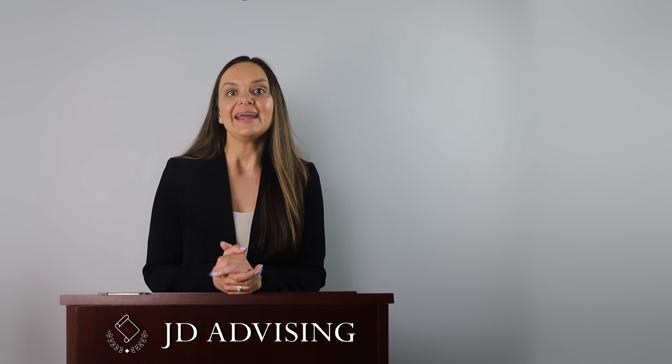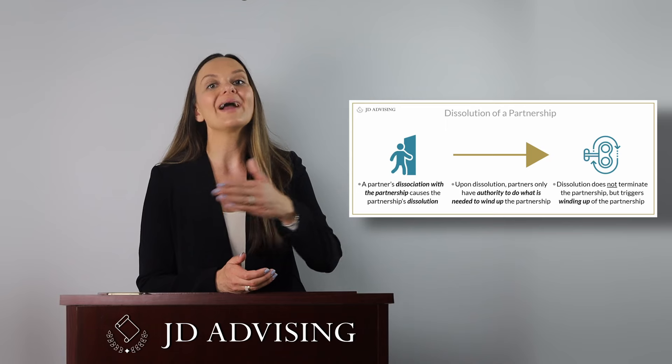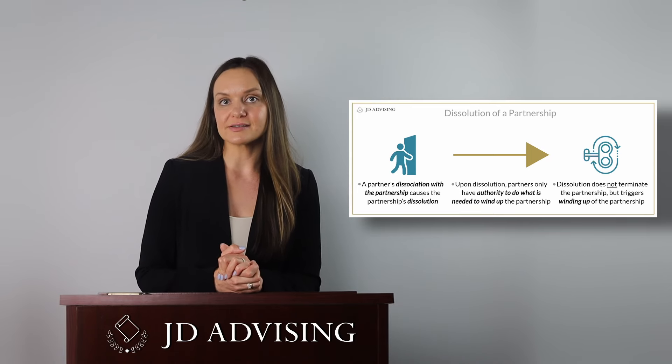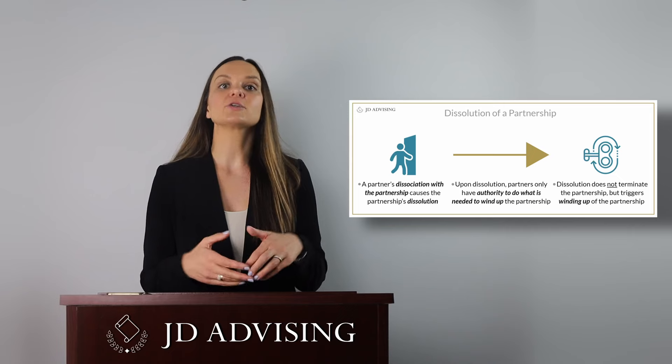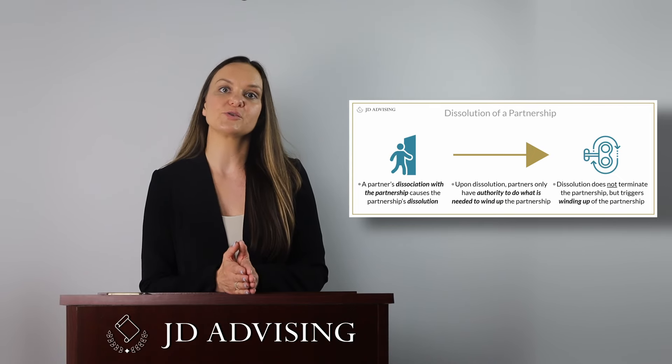The final highly tested partnership issue is how a partnership ends. There are three ways: the death of a partner, the end of a definite term or completion of an undertaking, and a partner's withdrawal. Withdrawal or dissociation is the most highly tested method. When a partner dissociates, dissolution occurs unless the remaining partners agree to rescind dissolution. Dissolution is not the end of the partnership — it triggers the winding up of business affairs, meaning assets are liquidated and creditors are paid. Then the partnership terminates.